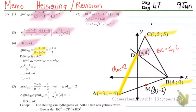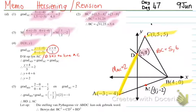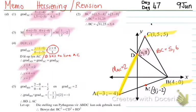Since point D lies on line AC, the gradient of AD equals the gradient of AC equals the gradient of DC — all gradients are equal on that line. So I set y plus 4 over 3 equal to 2. Multiplying: 3 times 2 is 6, so y plus 4 equals 6. Subtracting 4 gives y equals 2. Therefore, the coordinates of D are (0, 2).